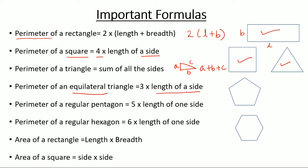Perimeter of a regular pentagon. Pentagon means 5 sides and regular means all sides are equal, all angles are equal. For example, this one — it has 5 equal sides. So the perimeter is 5 times length of one side.